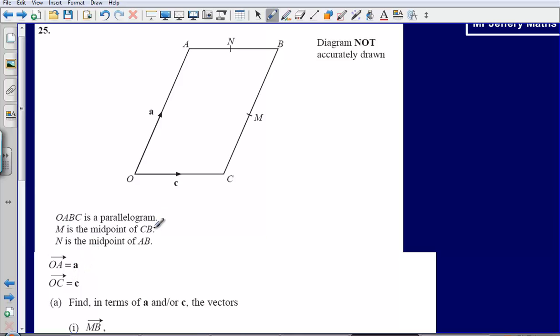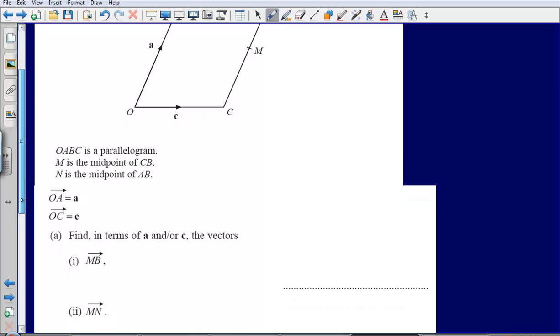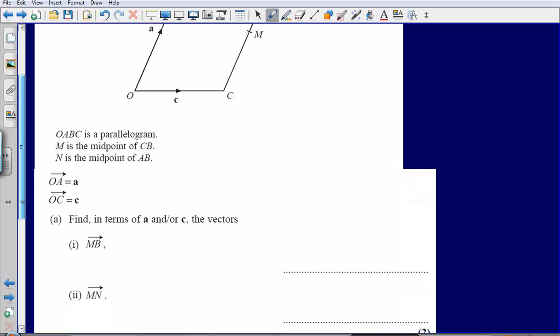Then M is the midpoint, so halfway in between C and B, and N is the midpoint of AB, so halfway in between A and B. OA is equal to A and OC is equal to C. We are asked first of all to find in terms of A and C the vectors MB and MN.